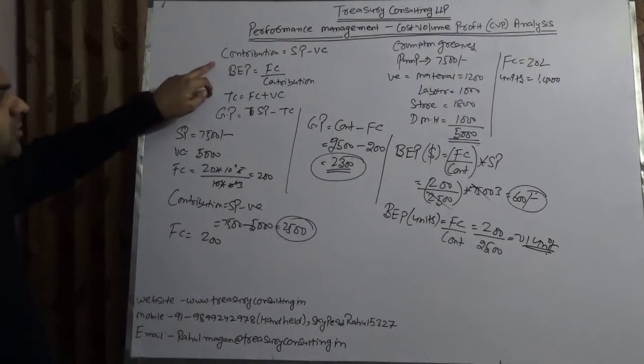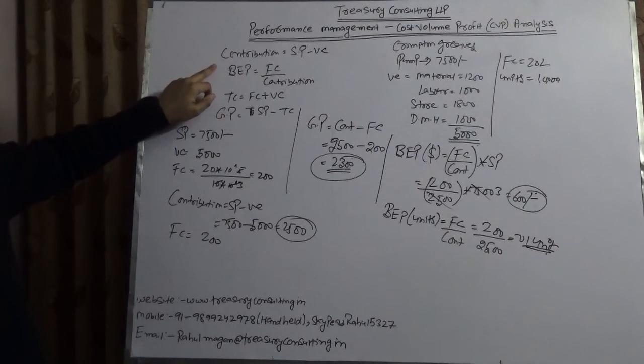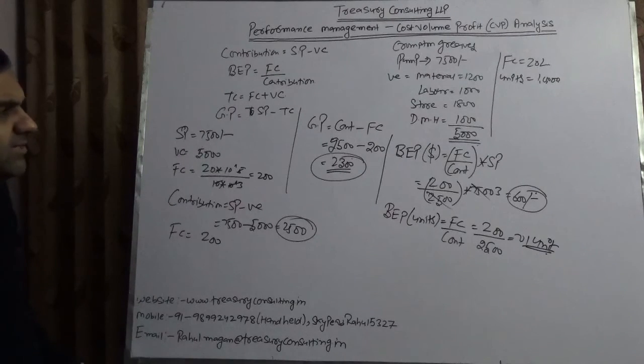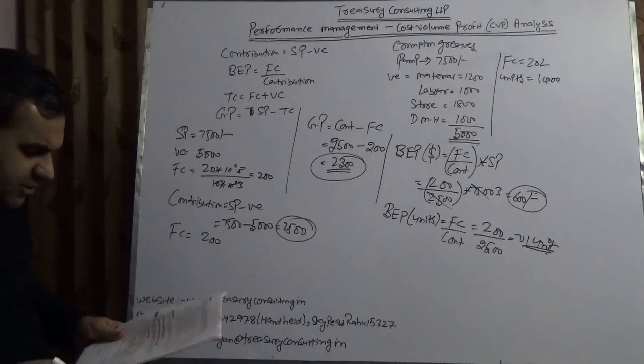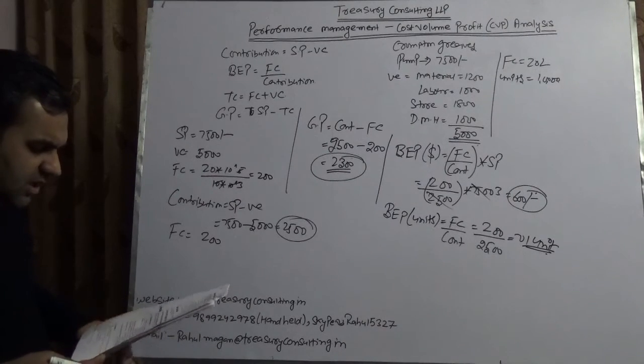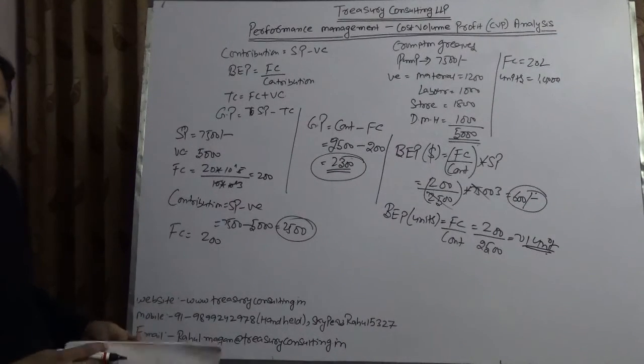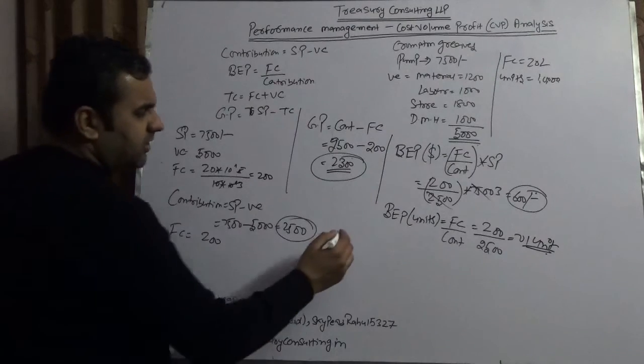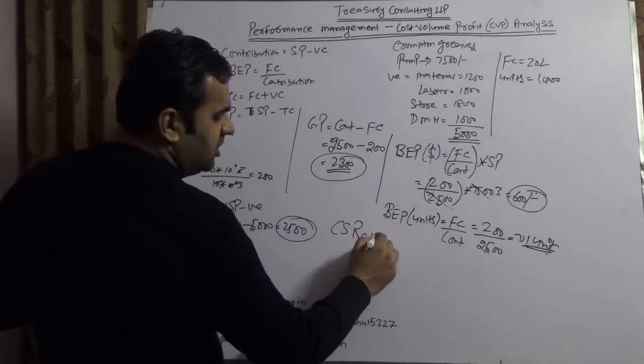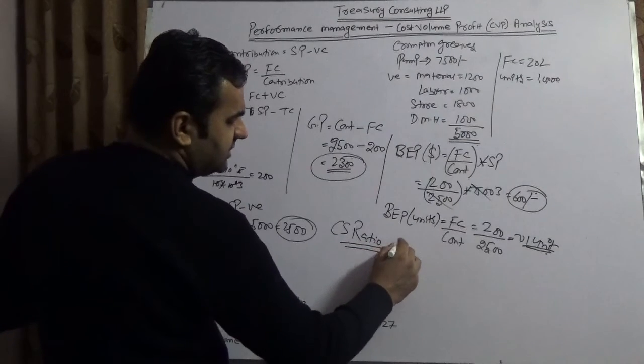This video is all about contribution, which is selling price minus variable cost, about breakeven and all. Before winding up this video, let me give you one more formula which we will cover in the next video: contribution to sales ratio. You have one important ratio, the CS ratio, which is contribution to sales ratio.